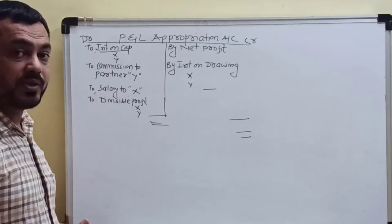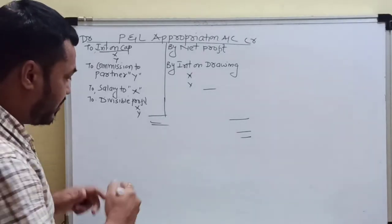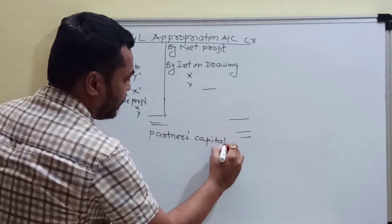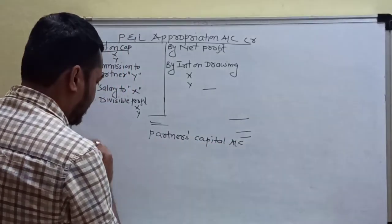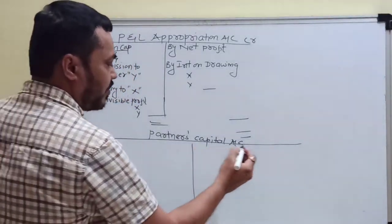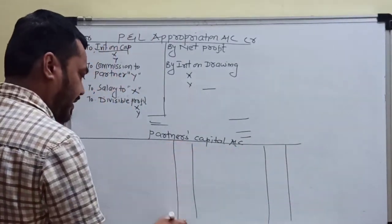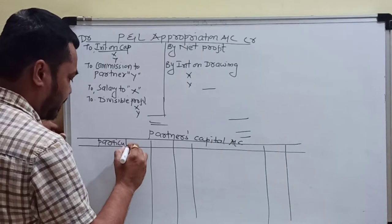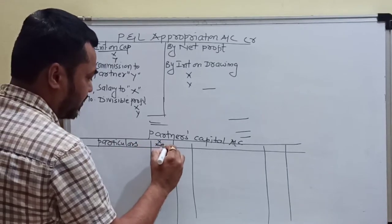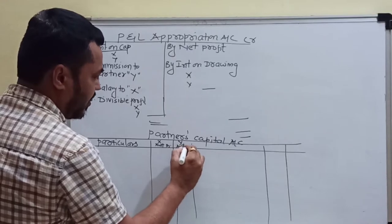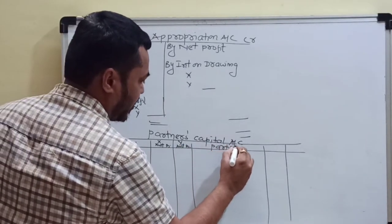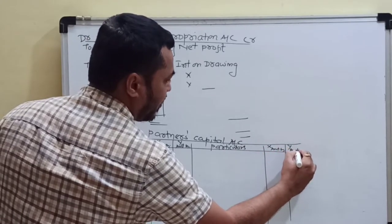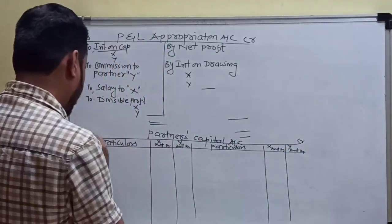After the profit and loss appropriation account, we have to prepare the capital account. So, partners capital account — we prepare it for X and Y with columns for particulars, amount in rupees for X, and amount in rupees for Y, on both the debit and credit sides.